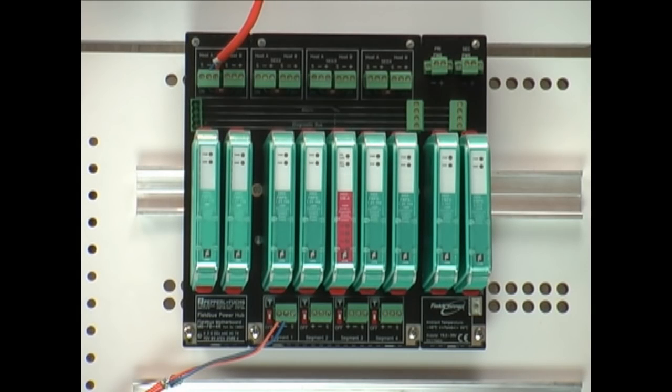The second component that makes up a Foundation Fieldbus segment would be the Foundation Fieldbus power supplies. This is an example of Pepperill & Fuchs power hub. There are different numbers of segment options. This is a four segment redundant supply.